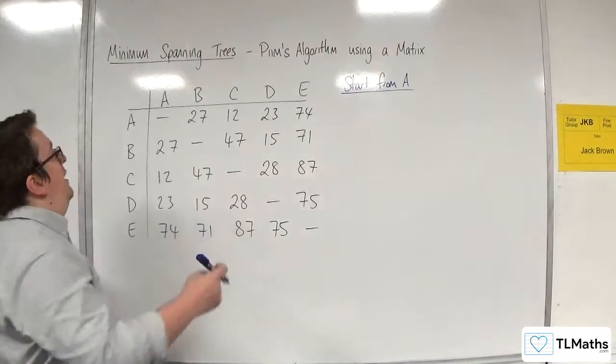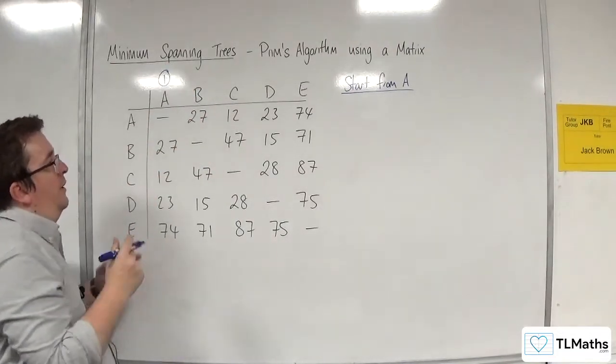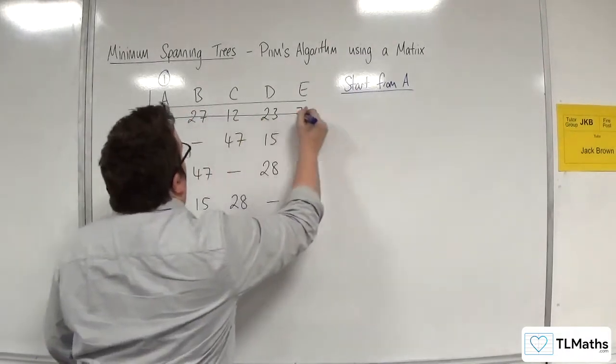We're going to start at A. What we're going to do is we are going to label A with a 1, because that's our starting vertex. And you delete row A.